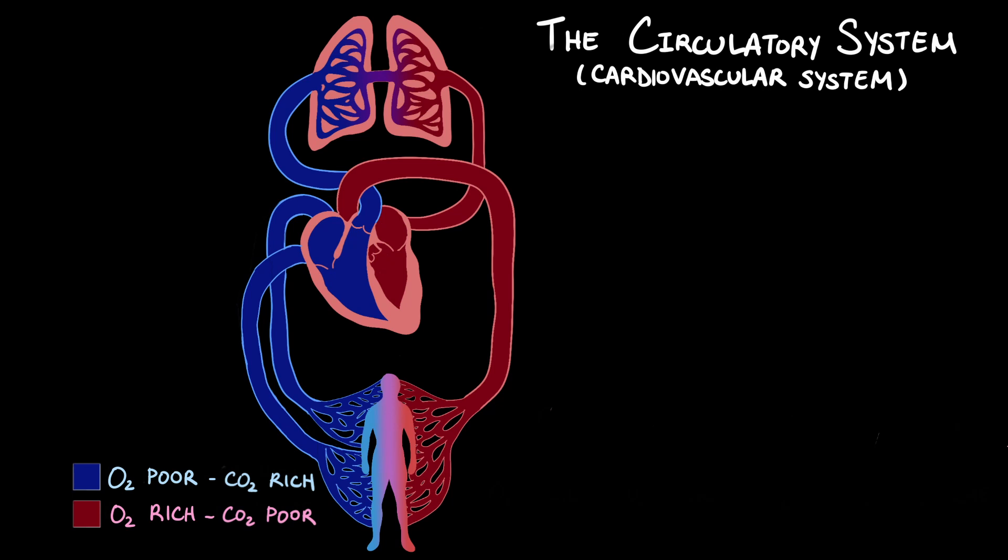The circulatory system, also called the cardiovascular system, has a very important job of carrying oxygen, nutrients, and hormones to cells throughout the body and removing waste products from the body like carbon dioxide.